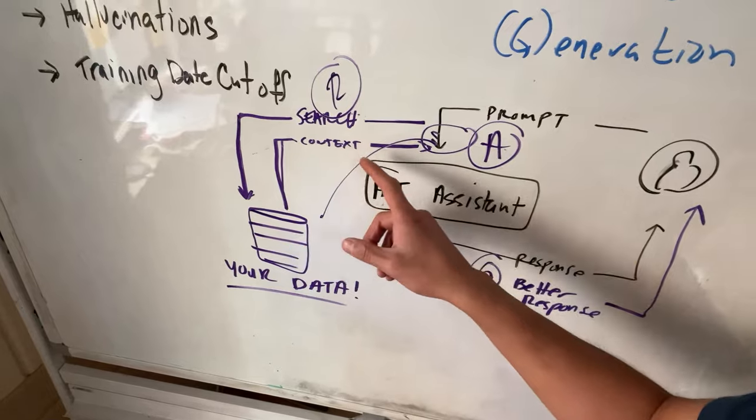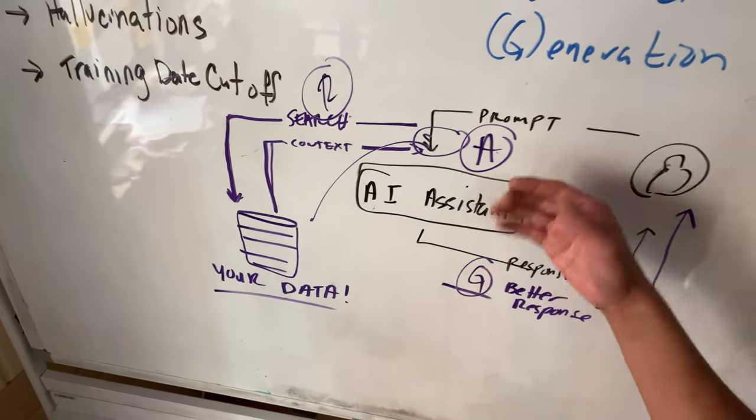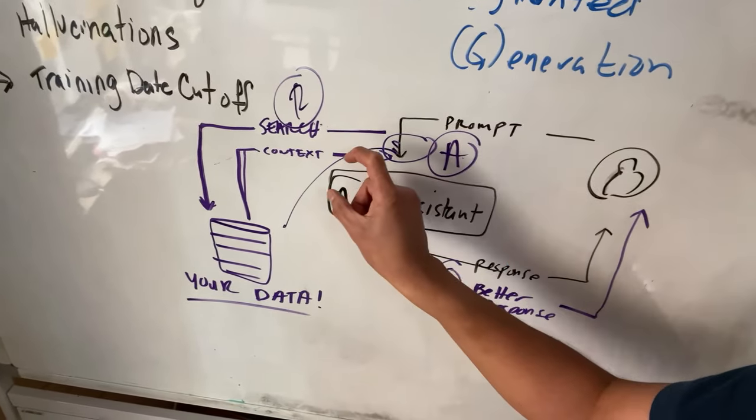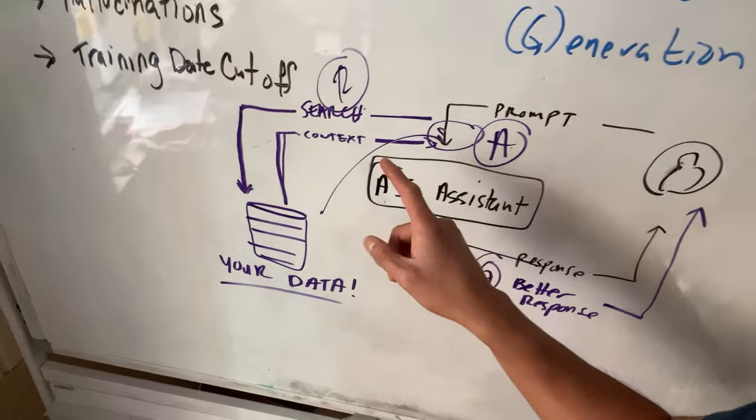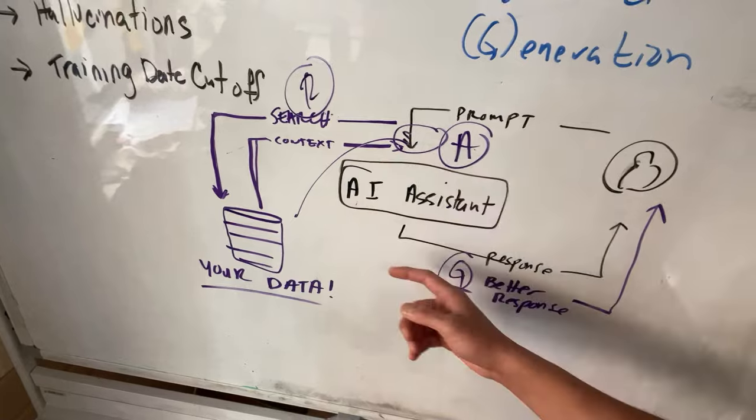There's going to be a retrieval that's done, and that context is going to be added in addition to your original prompt. And so the large language model is going to get your prompt and then also any relevant information that was found during this process.